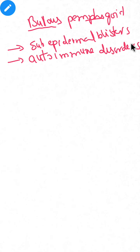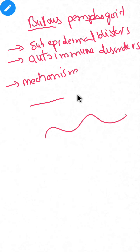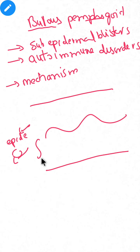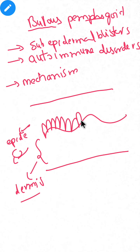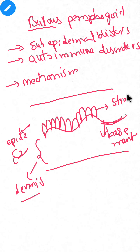Now moving to the mechanism of how blisters are formed in bullous pemphigoid. Basically in the skin we have two layers: epidermis and dermis. The innermost layer of the epidermis is called stratum basale, and below it is the basement membrane.